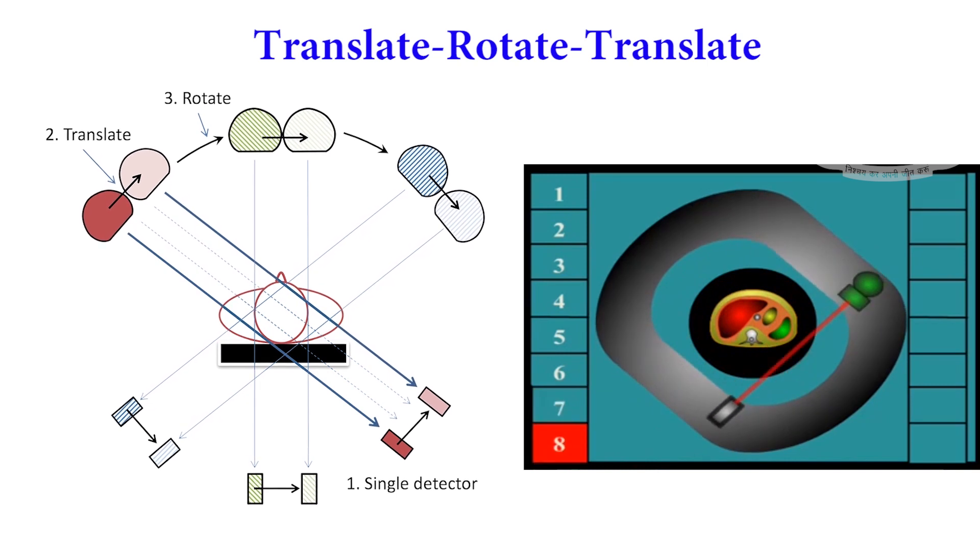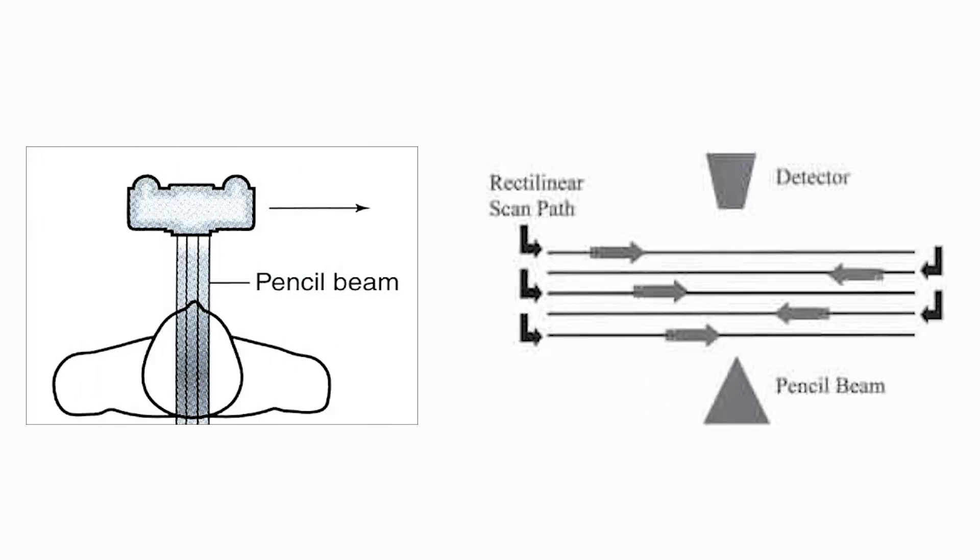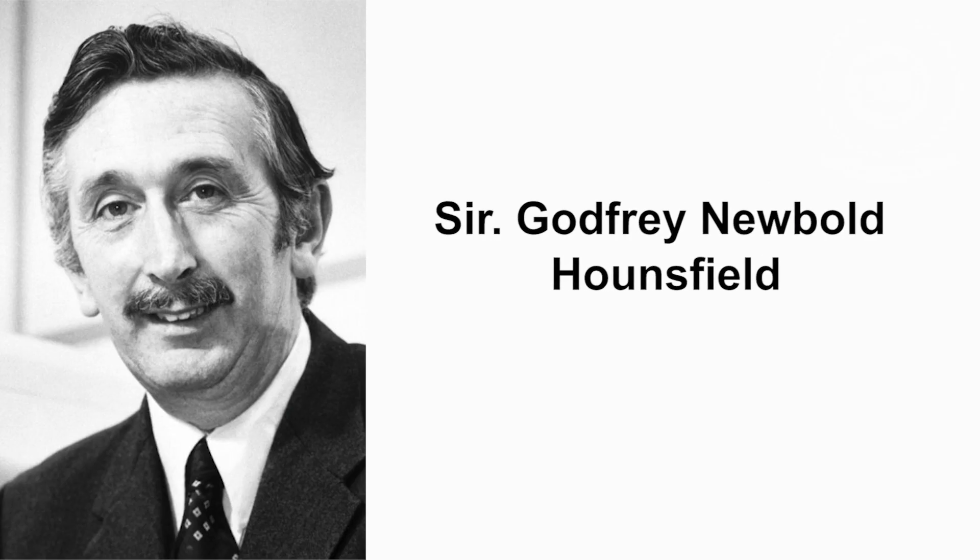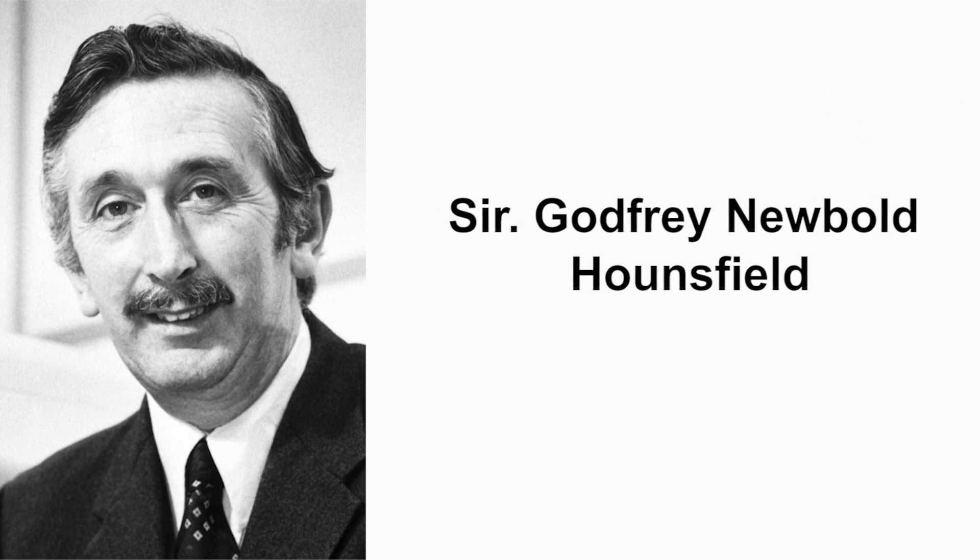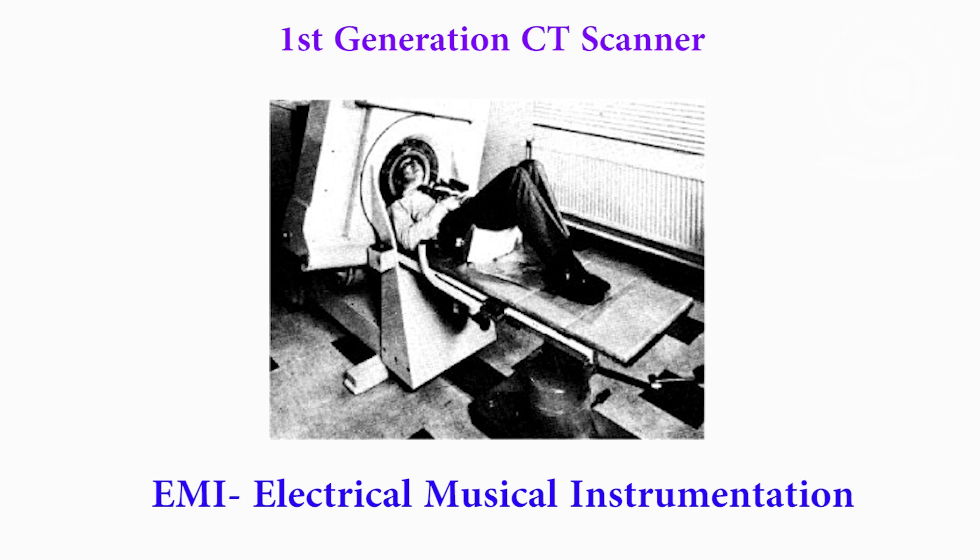Only one detector was used for imaging in this generation and this method of scanning was known as rectilinear pencil beam scanning. Pencil beam scanning geometry was introduced by Sir Godfrey Newbold Hounsfield, and this first generation was also known as EMI scanner where EMI stands for Electrical Musical Instrumentation.